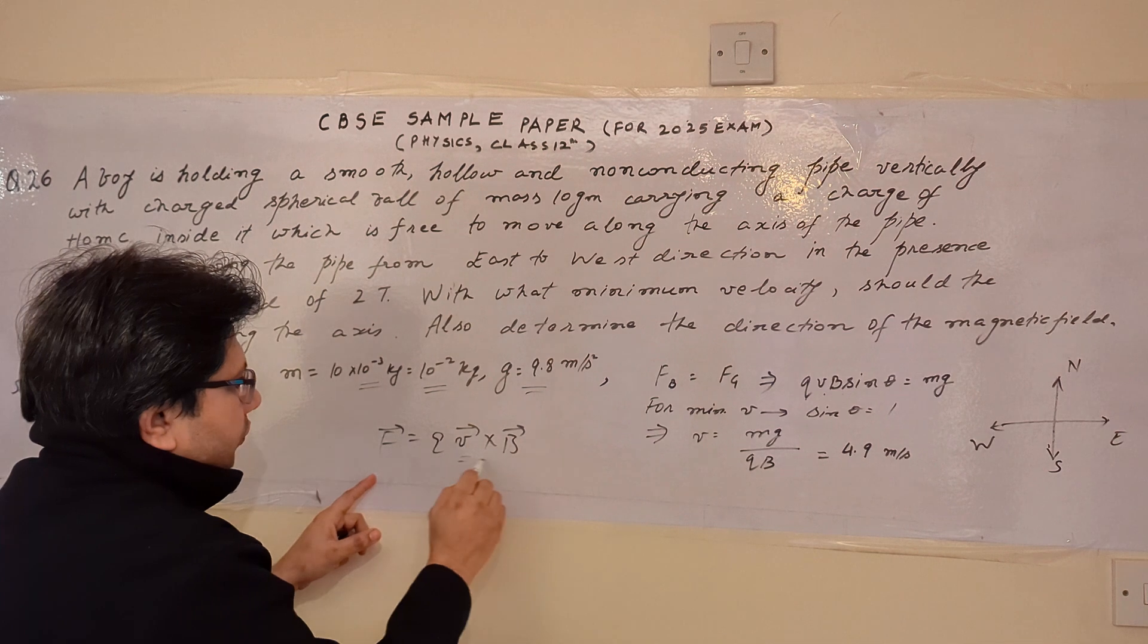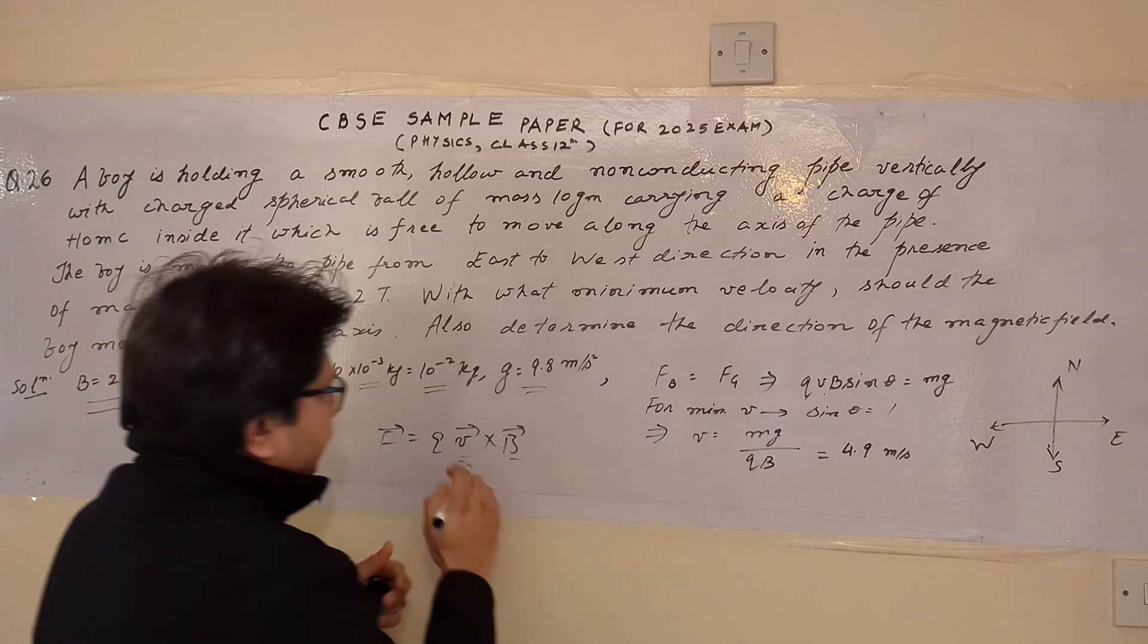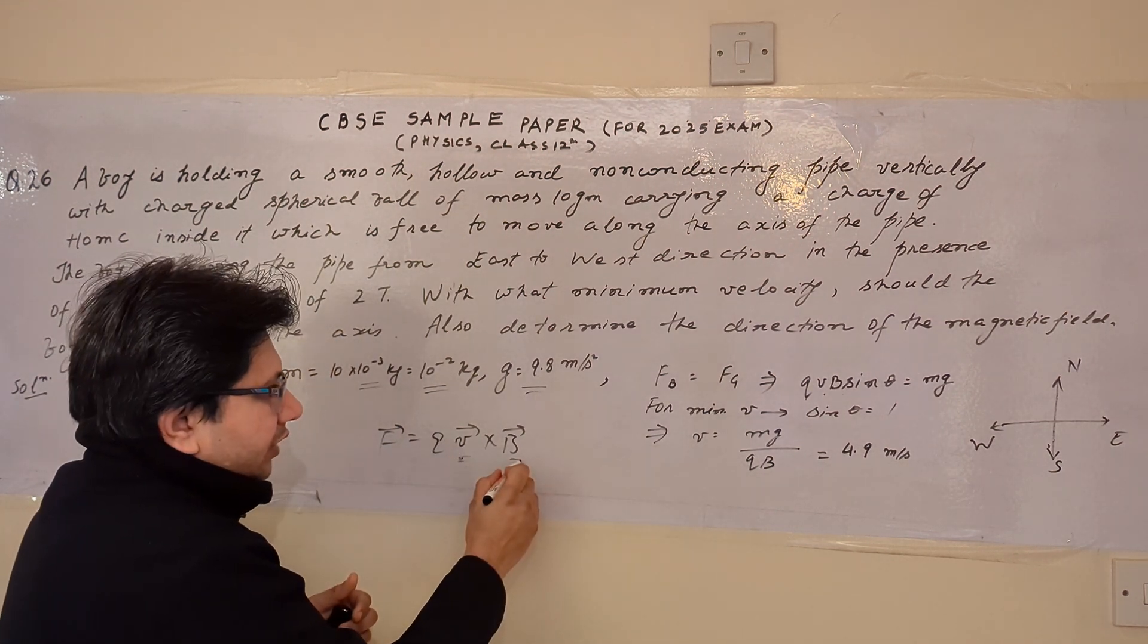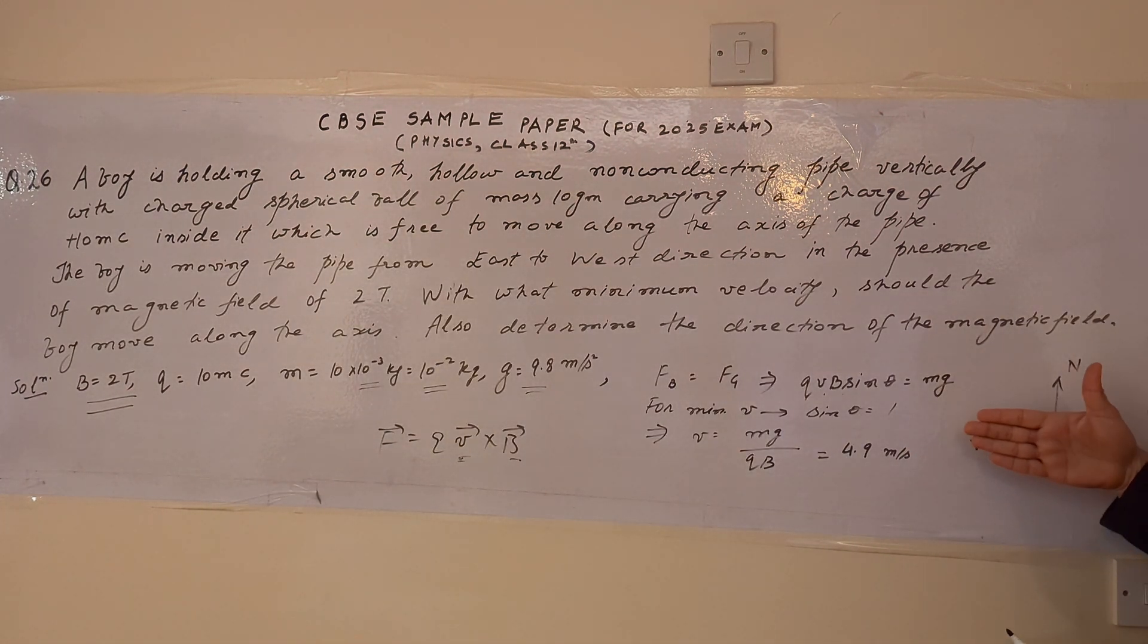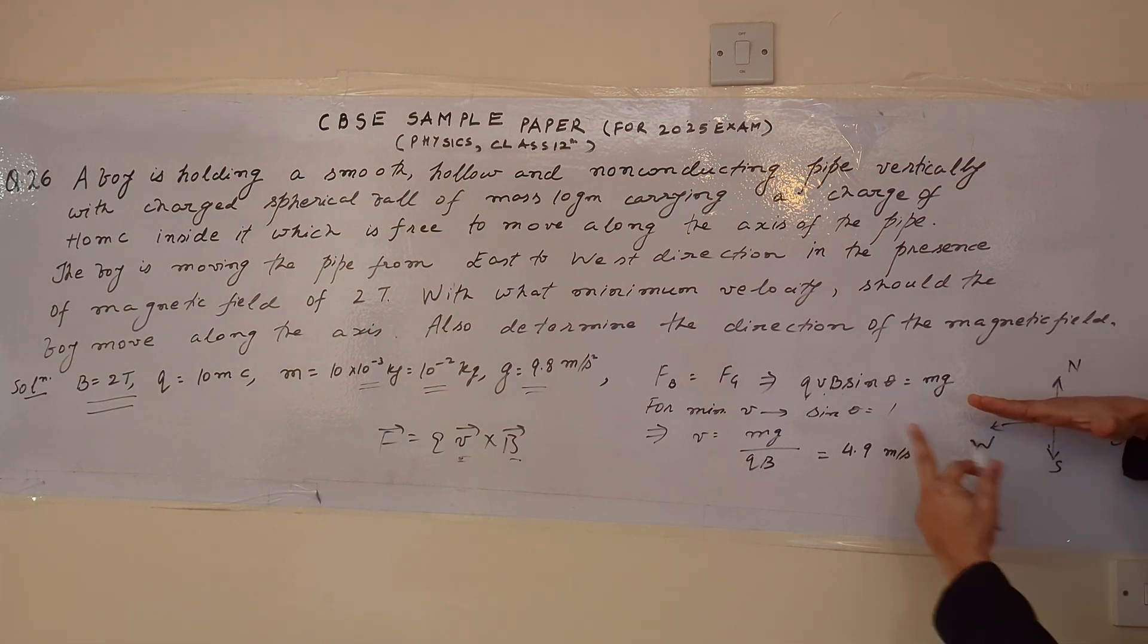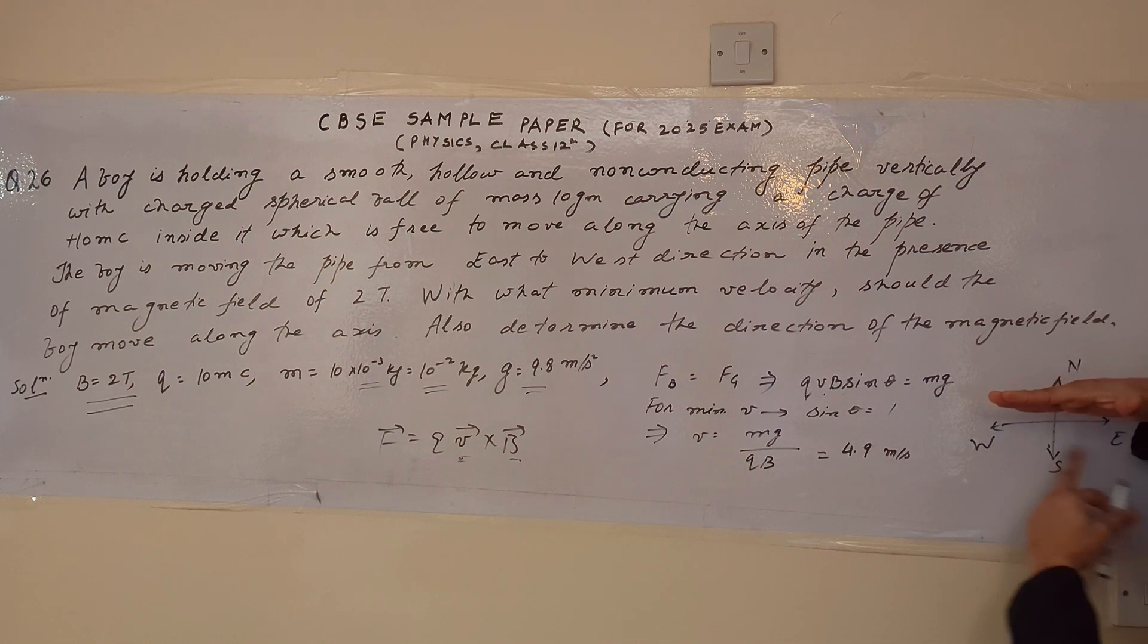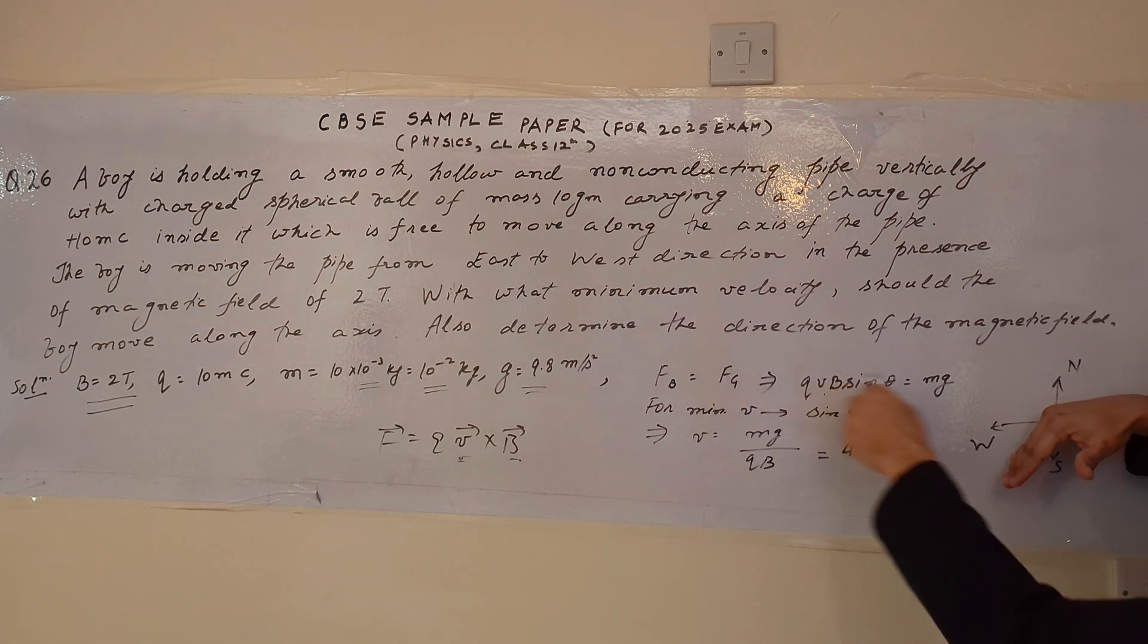Now, according to this formula, F equals to q v cross B. We can easily see that v is the first vector, B is the second vector. So we place our hand along the direction of v, and curl our finger in downward direction. Then the thumb will represent the direction of force. So like this. This is the direction of first vector, which is v, from east to west. Hand is curling downward. This should be the direction of the magnetic field, north to south. This is the answer of the second part of the problem.